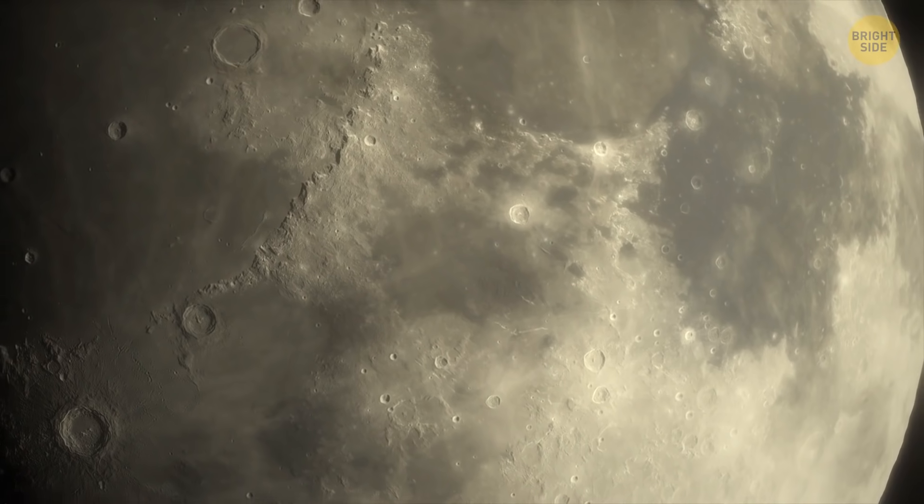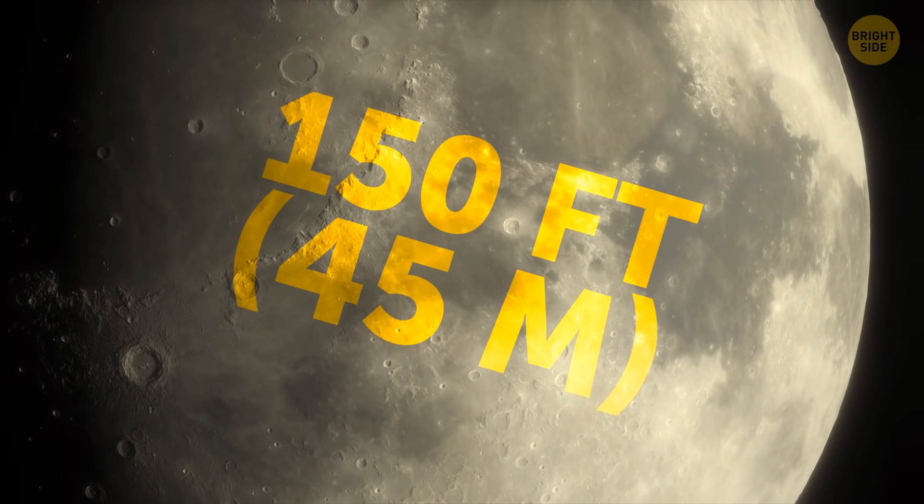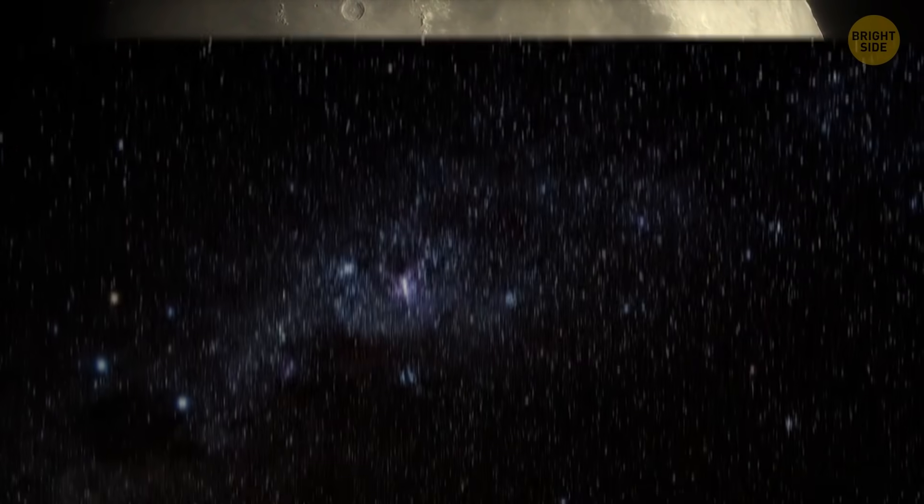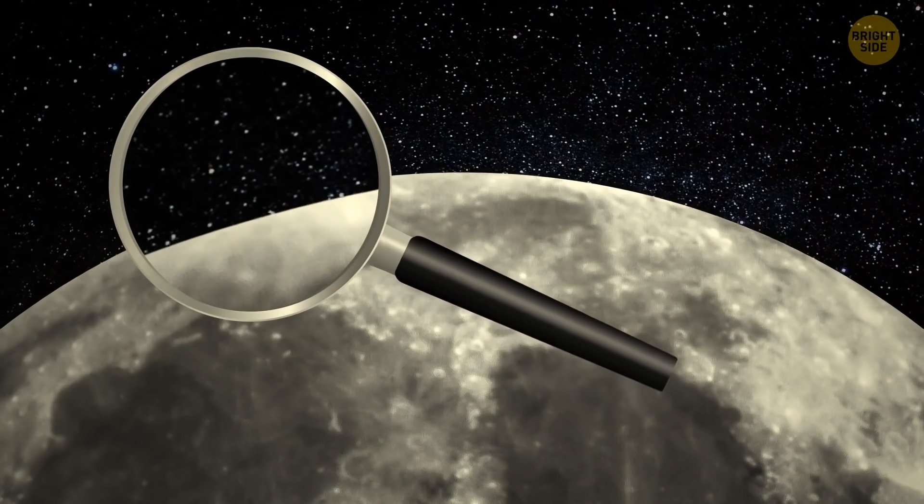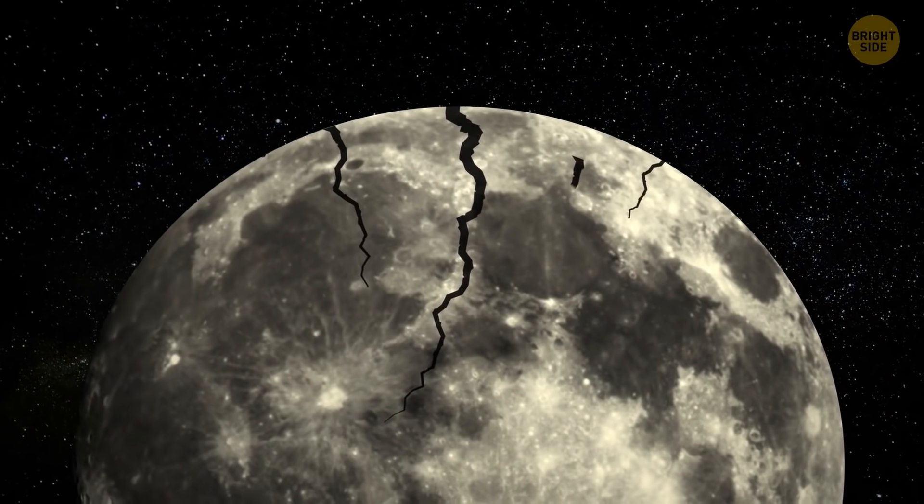The Moon might still be shrinking. Our planet's natural satellite has become 150 feet skinnier than it used to be several hundred million years ago. If its insides keep cooling, it might explain the quakes shaking the Moon's surface.